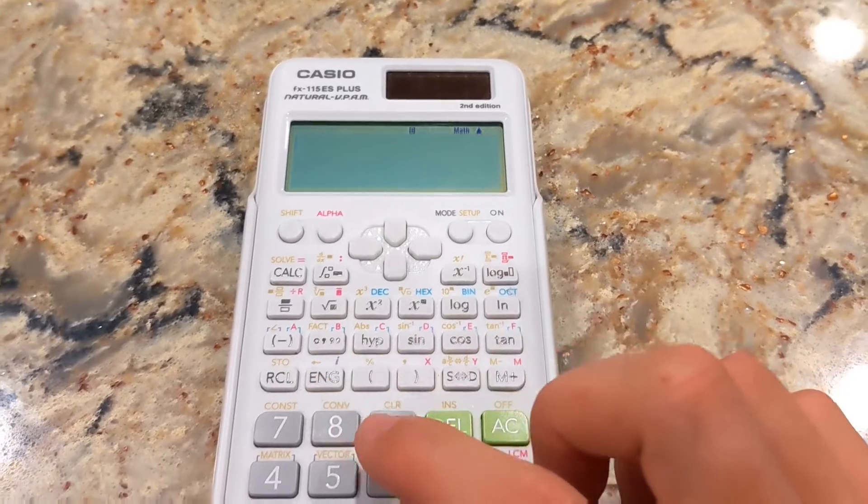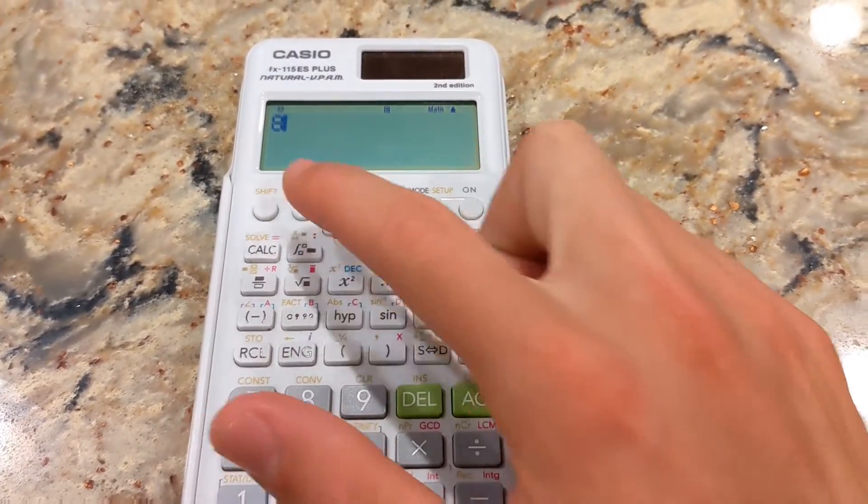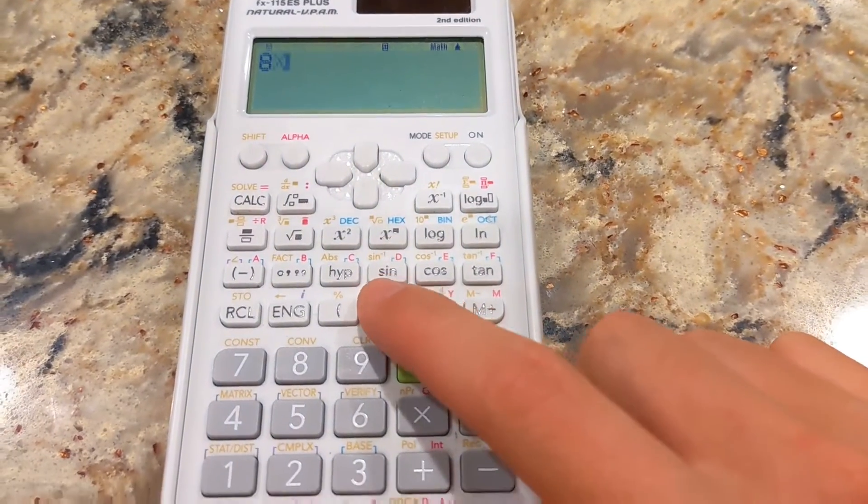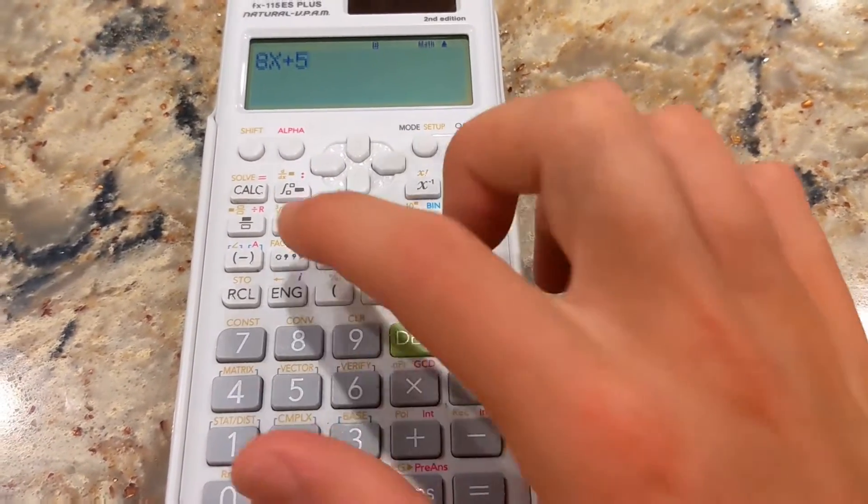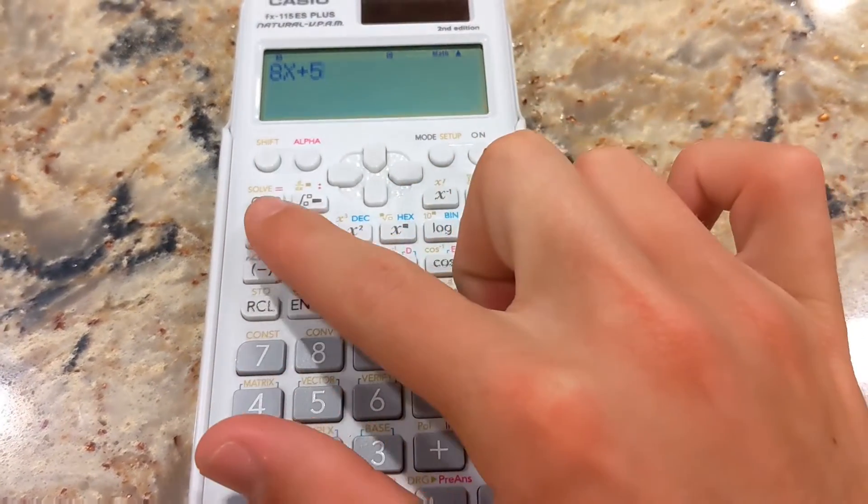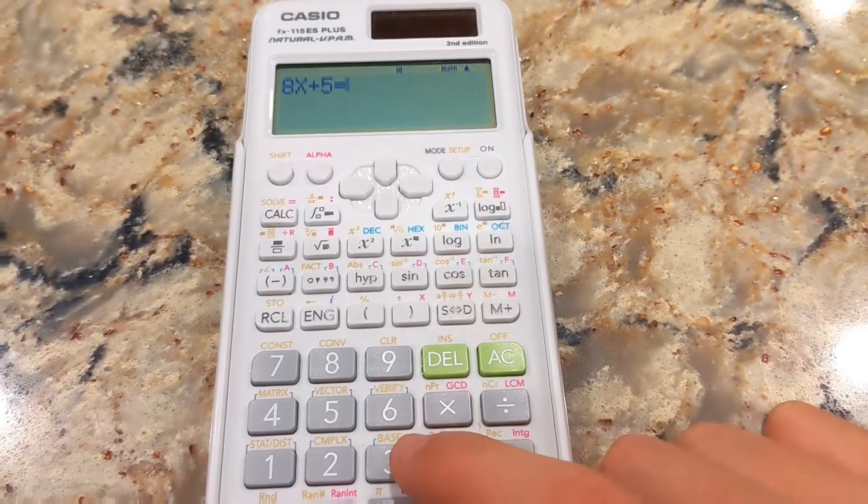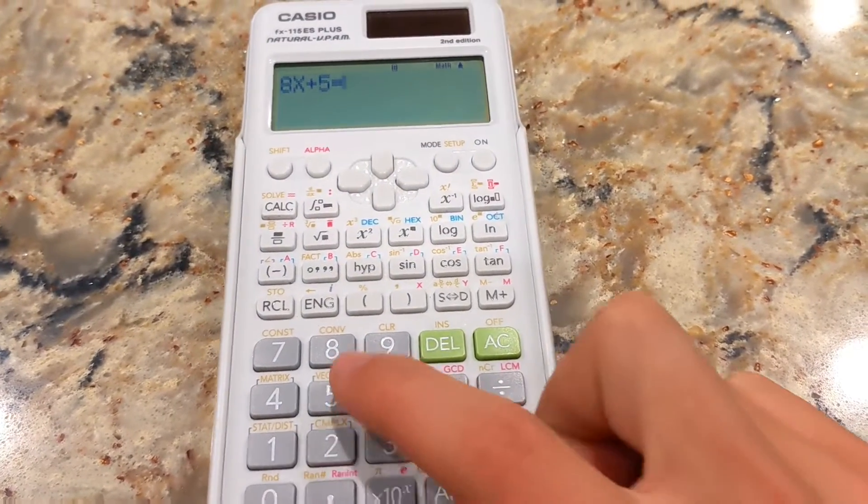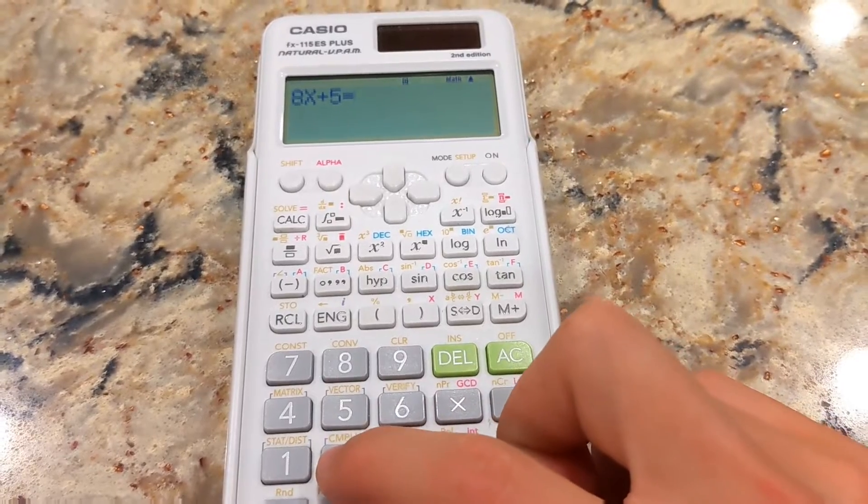Here's some other cool things that this thing can do. So 8, Alpha, and here's X. 8X plus 5, Alpha again. Calc equals. And let's say 8 times 2 plus 5 would give us 21.